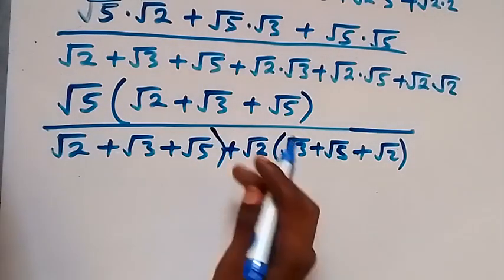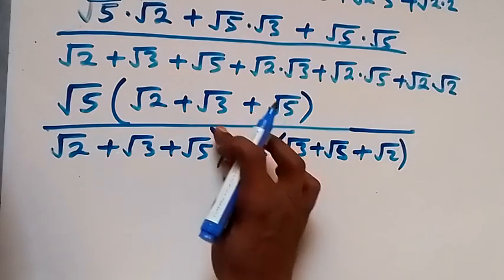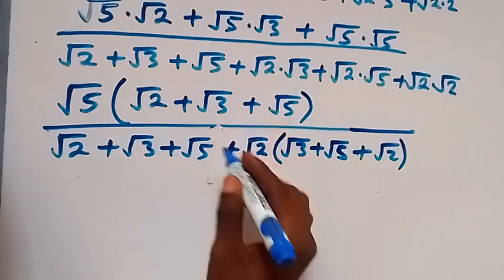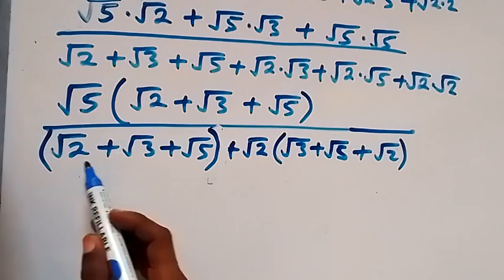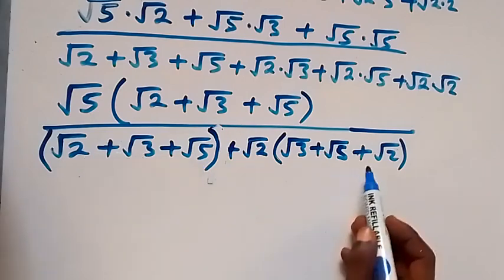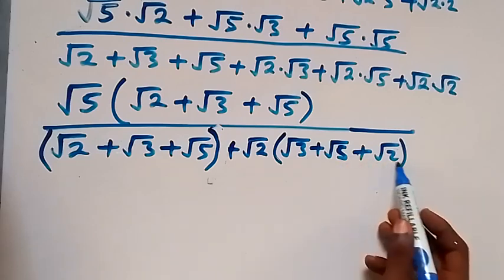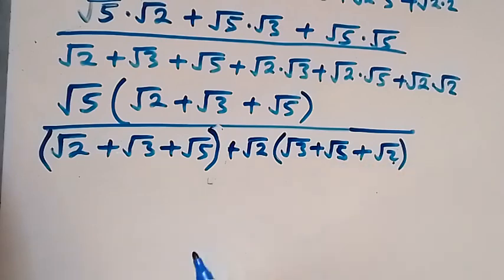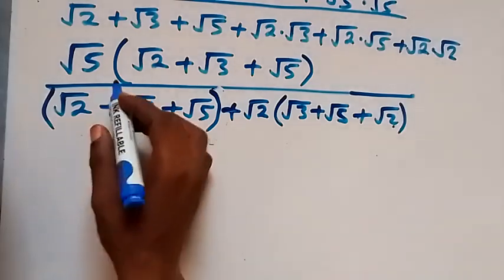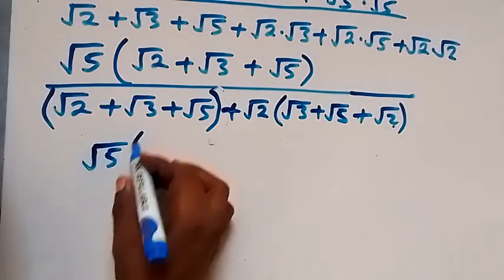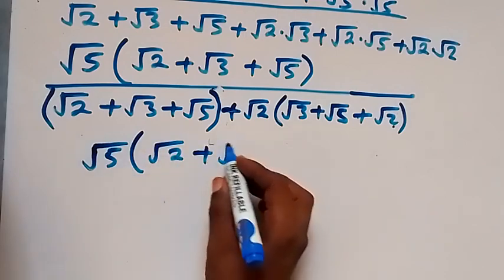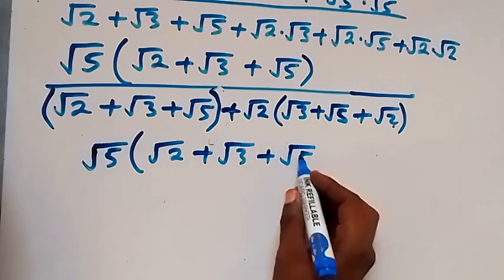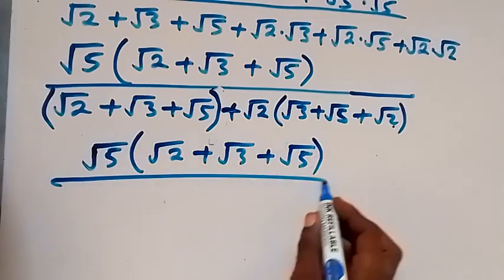Let's group this together as well and put this in bracket. When we look at this, root 2 plus root 3 plus root 5 — we have the same thing here. We have root 2, we have root 3, we have root 5, so these are common things. Let's factor it out now. This becomes root 5 into bracket root 2 plus root 3 plus root 5, all over...